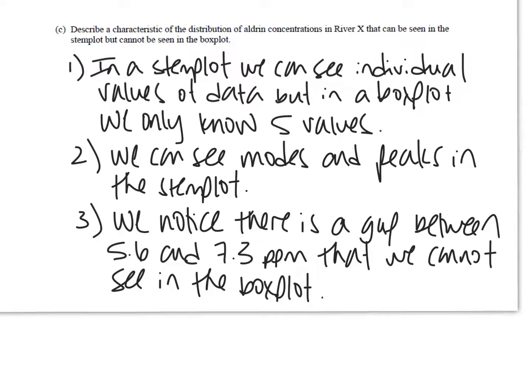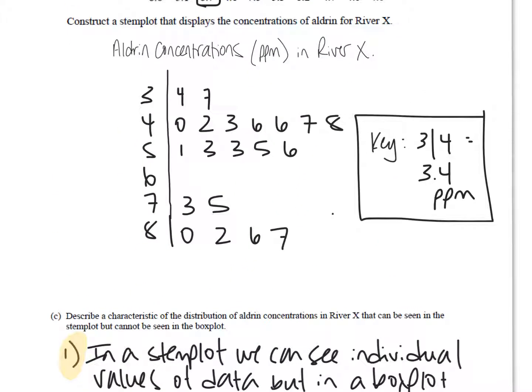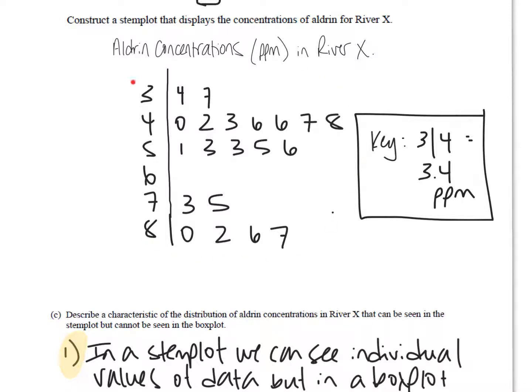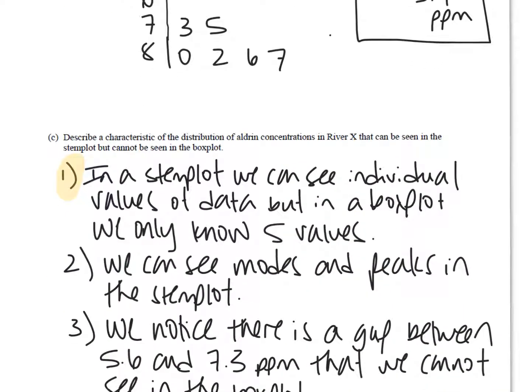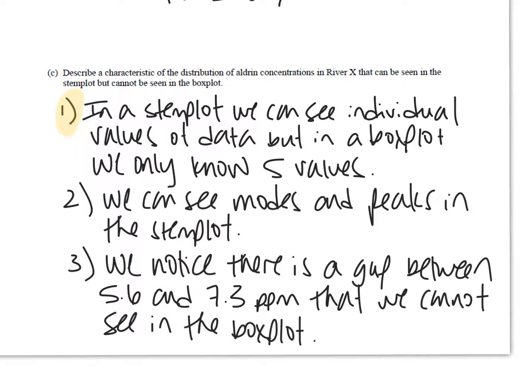So last but not least, you guys described a characteristic of the distribution of aldrin concentrations in river X that you can see in the stem plot, which is part B, but you cannot see in the box plot, which is the first part that we did, the three box plots that were all on top of each other. So first of all, number one, probably most important and most obvious, is that in that stem plot that we just did up here, we can see all the individual values. We know every single number or PPM that was taken from river X, we know all 20 of them. In that box plot, we only knew those five numbers, and we didn't even really know them, we just had to estimate them. So that's really important and probably the most obvious difference.